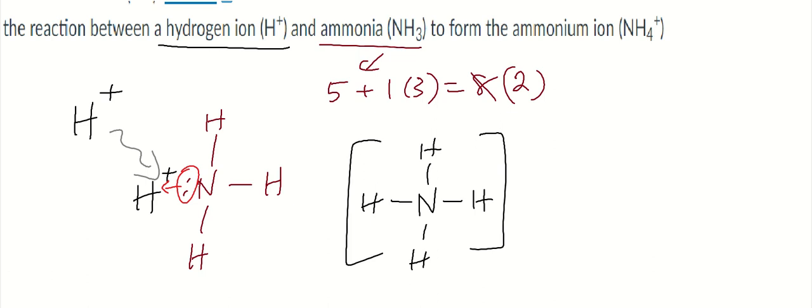So you're going to get this ammonium ion, and some textbooks will use an arrow there to indicate that that covalent bond was made using two electrons from one atom, in this case, the nitrogen from the ammonia molecule.